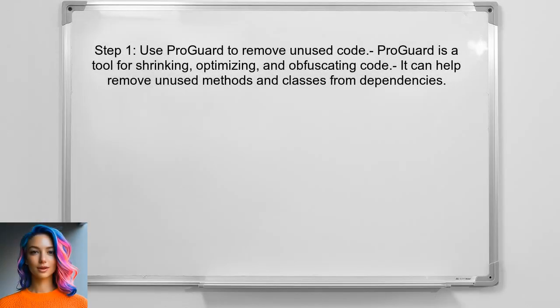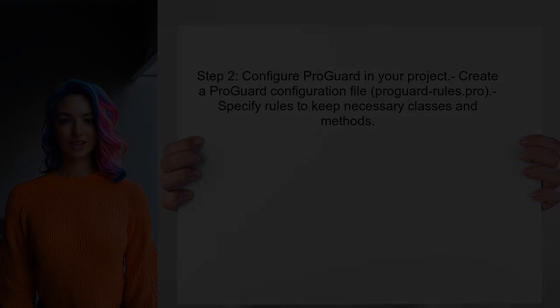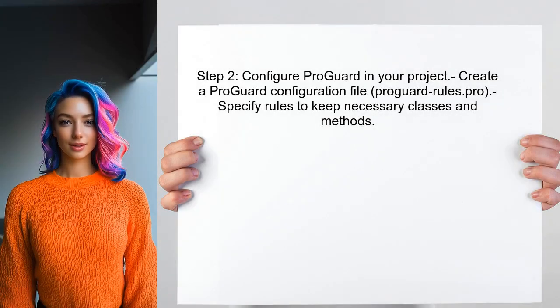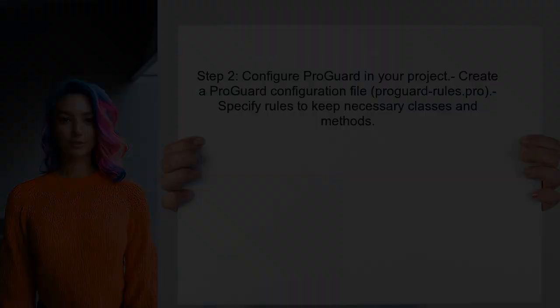To begin removing unused methods and classes from dependencies, first consider using a tool called ProGuard. This tool helps in shrinking, optimizing, and obfuscating the code. Next, configure ProGuard in your project by adding a configuration file that specifies which classes and methods to keep or discard.